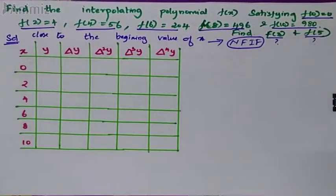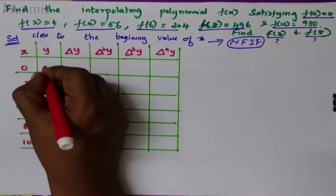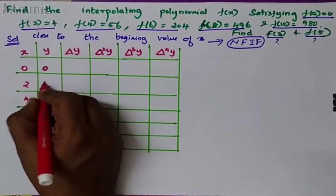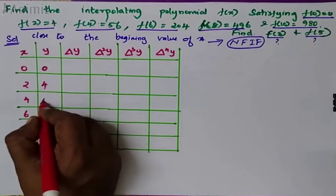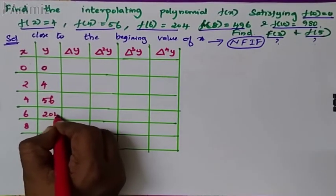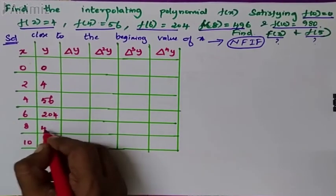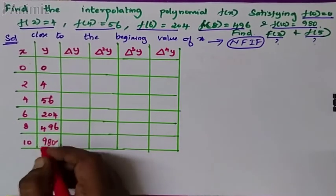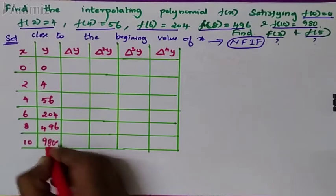Now we'll build the table. 0 corresponds to value 0, 2 to 4, 4 to 56, 6 to 204, 8 to 496, 10 to 980.